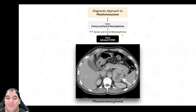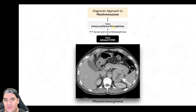It's important to note that the metanephrines test can be altered by certain conditions — patients must be lying flat and there should be no abdominal manipulation during testing to ensure accuracy.